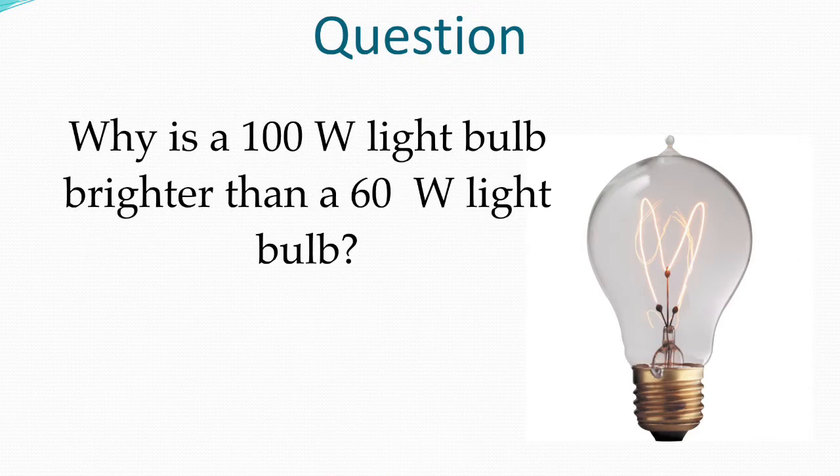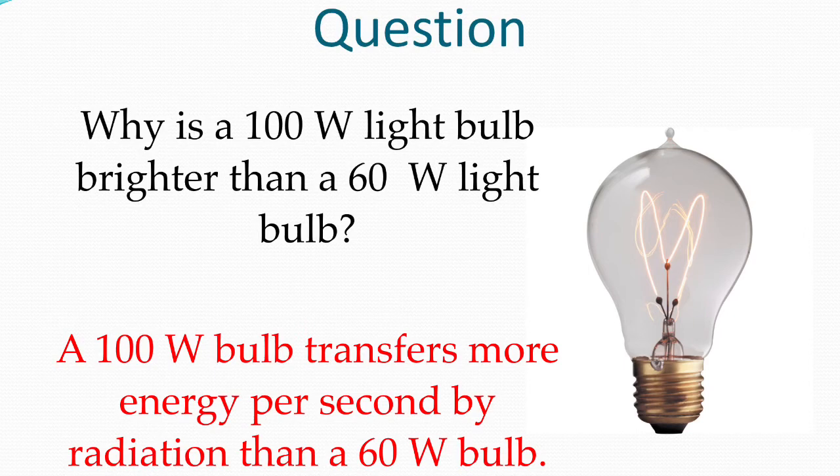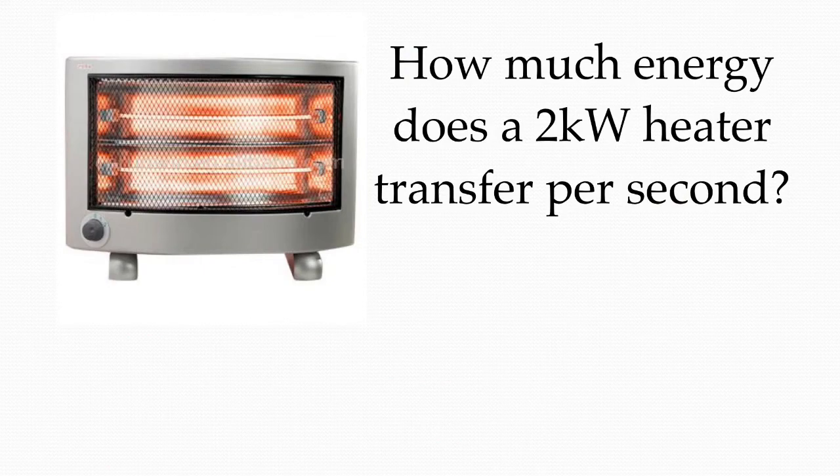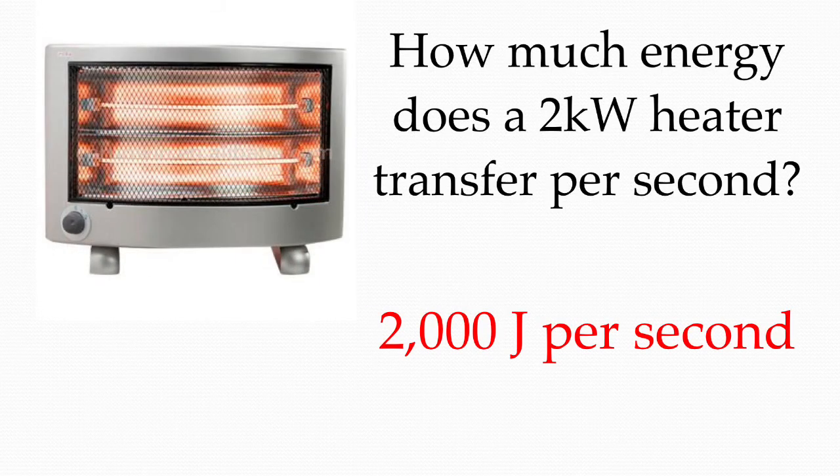And now a question for you. Why is a 100 watt light bulb brighter than a 60 watt light bulb? Please pause the video now and write an answer in your book. A 100 watt light bulb transfers more energy per second by radiation than a 60 watt light bulb. How much energy does a 2 kilowatt heater transfer per second? Pause the video and write your answer in your book before you move on. 2 kilowatts means it transfers 2000 joules every second.